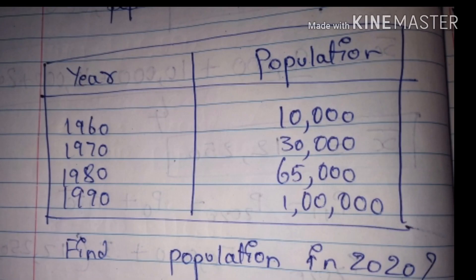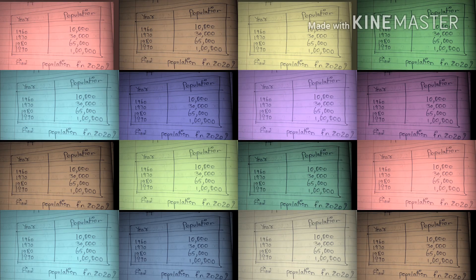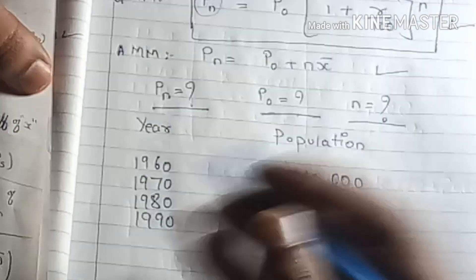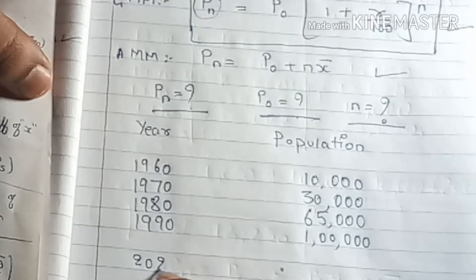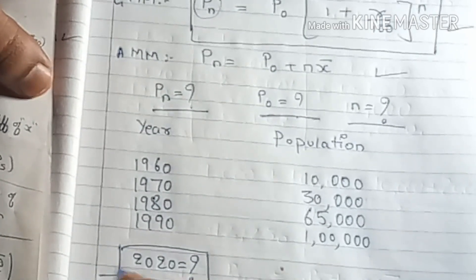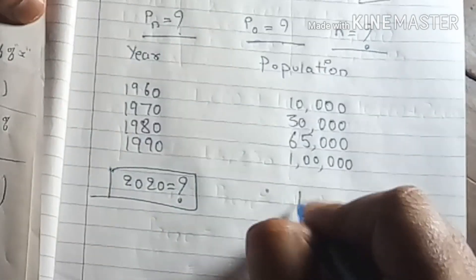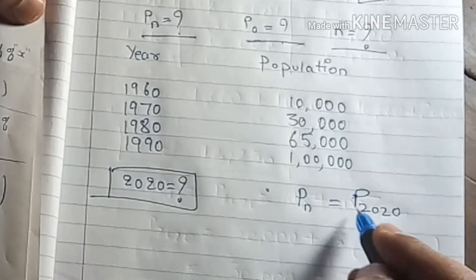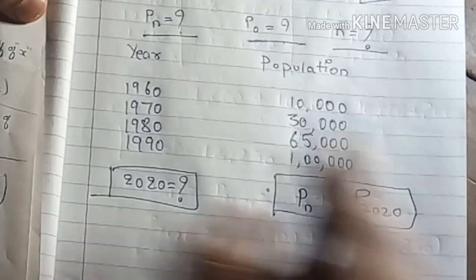Let us look at the problem. When we solve the problem, we can understand the meaning of all the terms in the formula. The year and population data is given, and they have asked for the population in 2020. So Pn = P2020, that is, the population at 2020. This is the meaning of Pn.